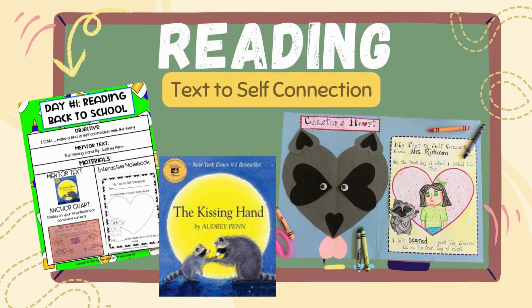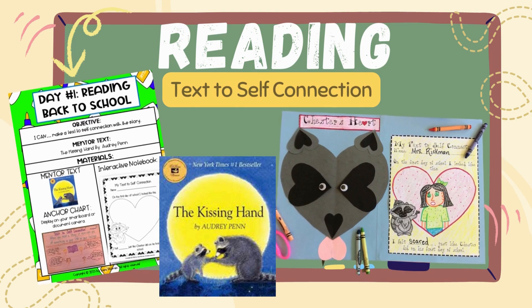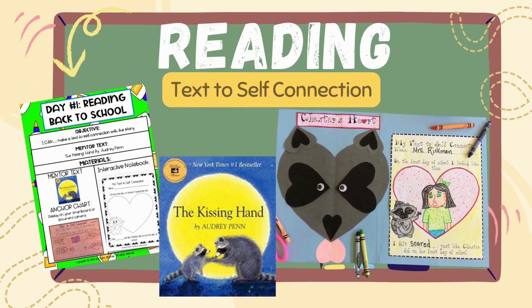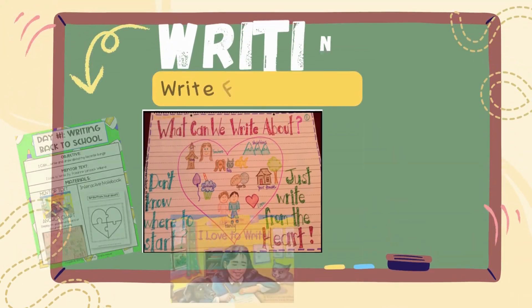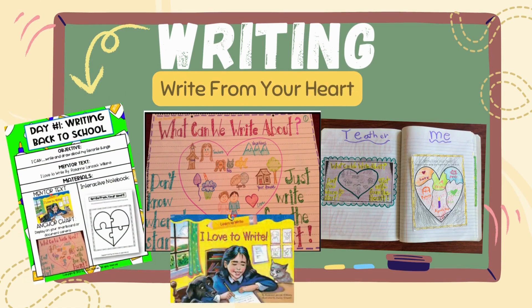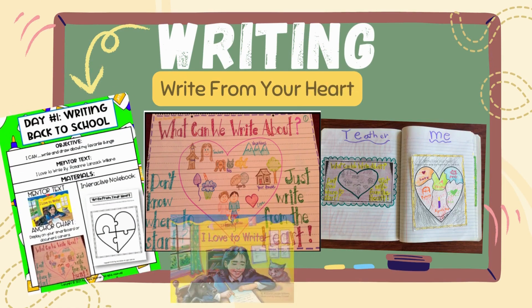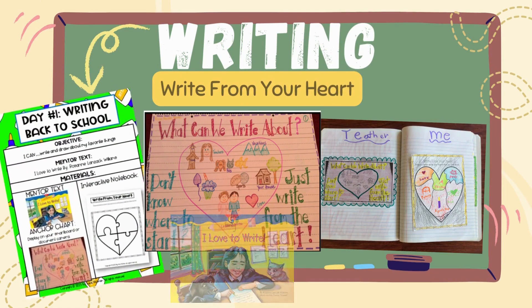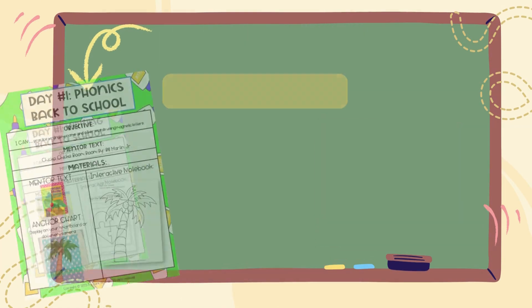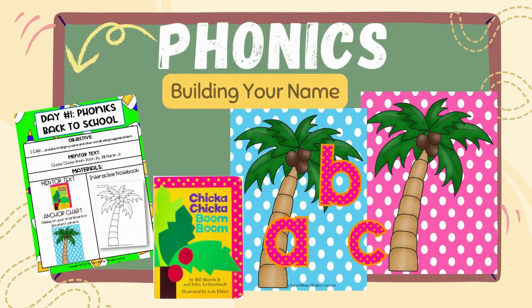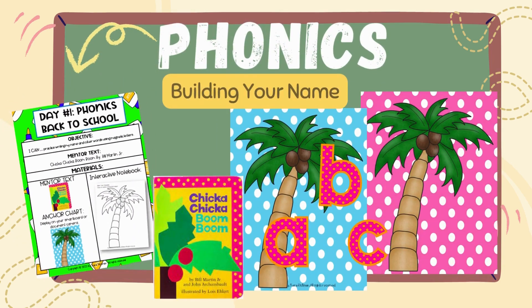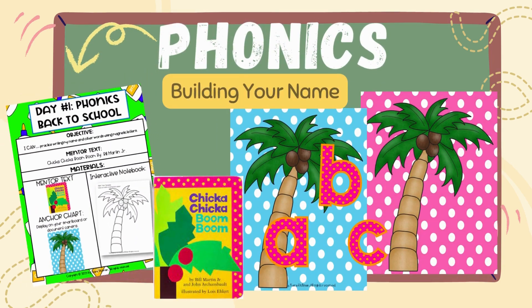For reading, the objective is I can make a text-to-self connection with the story. For writing, the objective is I can write and draw about my favorite things. For phonics, the objective is I can practice writing my name and other words using magnetic letters.